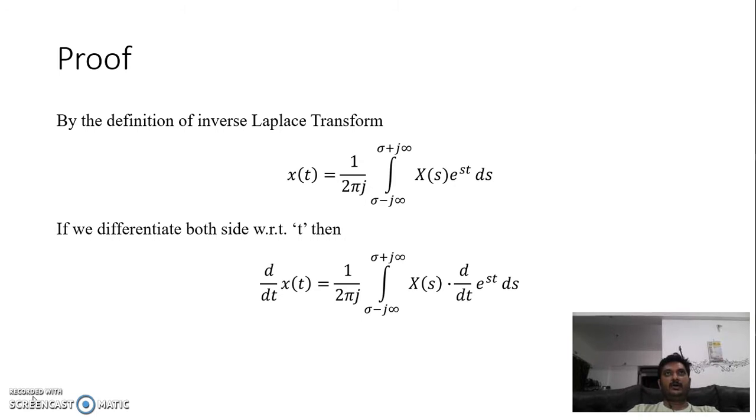equal to 1 upon 2πj, integration from σ minus j∞ to σ plus j∞ of X(s) times d/dt of e^(st) ds, which will be equal to 1 upon...